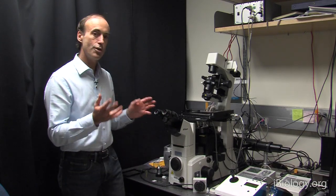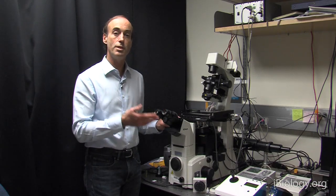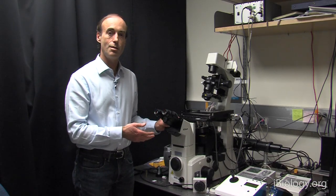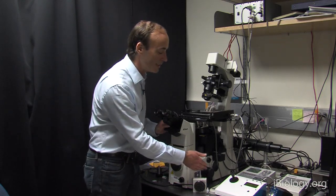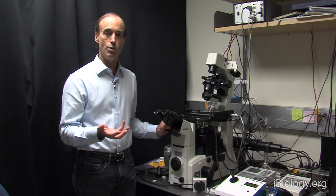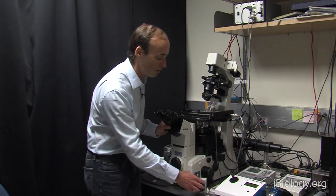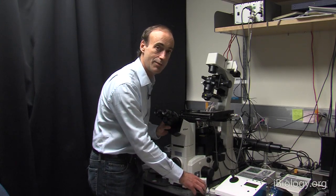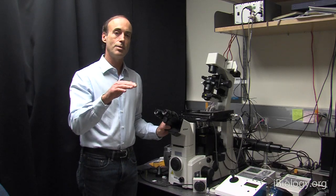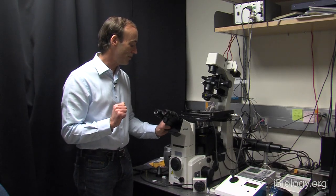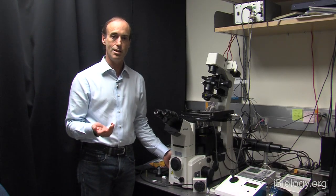The first thing you want to do is become familiar with the focusing knobs of your particular microscope. In this microscope, on the right side is a fine focusing knob with a remote focusing device that allows us to fine tune the level of focus. And on the left side is a coarse focusing knob.